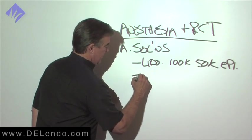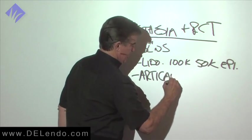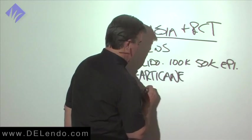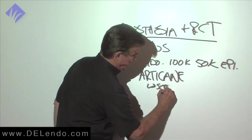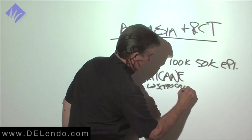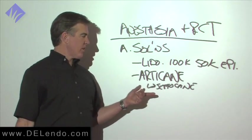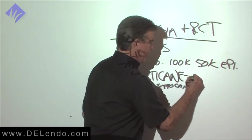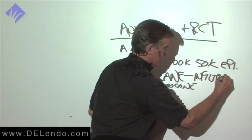We're going to use articaine. In the United States, it's the only one company that sells this is Septodont, so it's called Septocaine. Been in Europe, Canada, the rest of the world for many years before it came to the United States. This is known for infiltration capabilities.